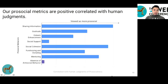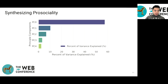For each metric, we measure the strength of association with human judgments by computing the MCC score. This chart shows each metric and its correlation with human judgments of prosociality. Most of the proposed metrics are positively correlated with human judgments of prosociality. By contrast, absence of antisocial behavior is not strongly associated with human judgments. These results prove that new metrics like those proposed are needed for platforms to measure their health, and prosocial behaviors often share a common motivation, suggesting they could be summarized with a single proxy metric.